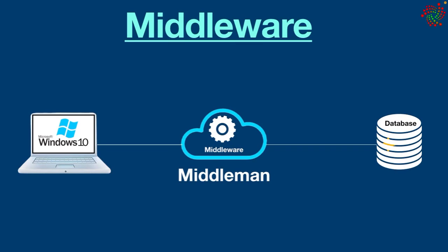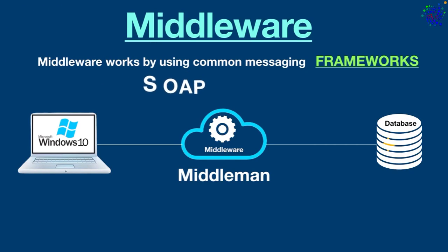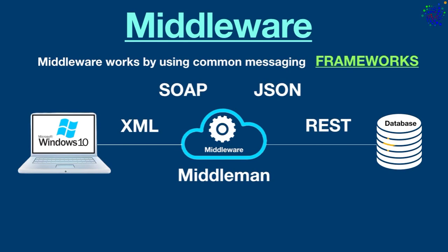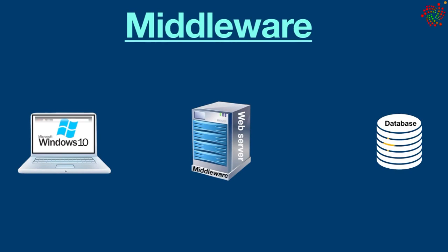You must be wondering how middleware works. It looks very complicated — acting as a middleman between different platforms and protocols sounds like a big thing. However, middleware works by using common messaging frameworks such as Simple Object Access Protocol (SOAP), JavaScript Object Notation (JSON), Extensible Markup Language (XML), and Representational State Transfer (REST). For example, a web server is middleware that connects websites to the backend database.